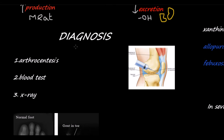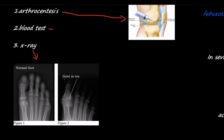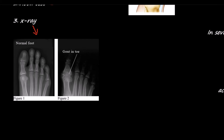Now let's talk about diagnosis. Arthrocentesis is done to see whether uric acid crystals are present in the synovial fluid. We also check for uric acid levels in the blood. Additionally, an X-ray of the affected joint can be taken, in which we can see the accumulation of crystals.